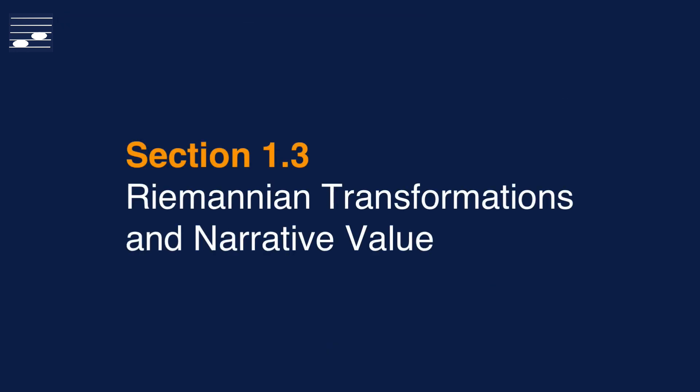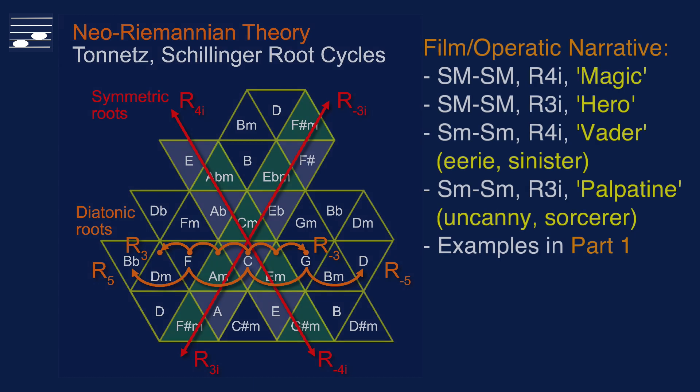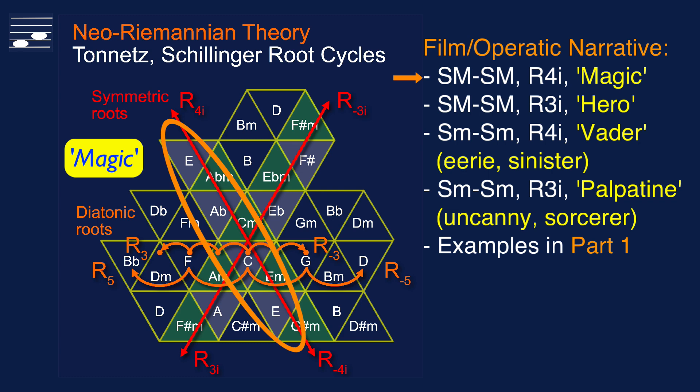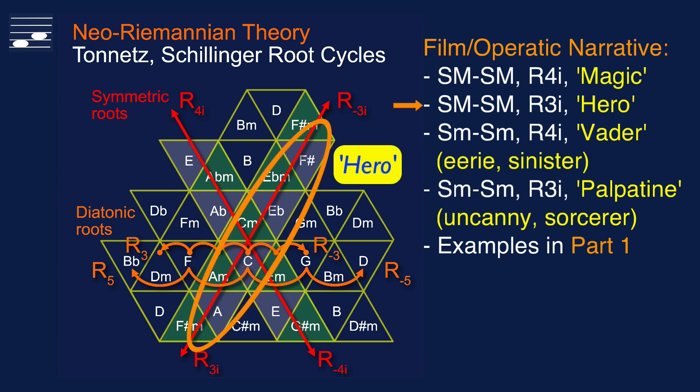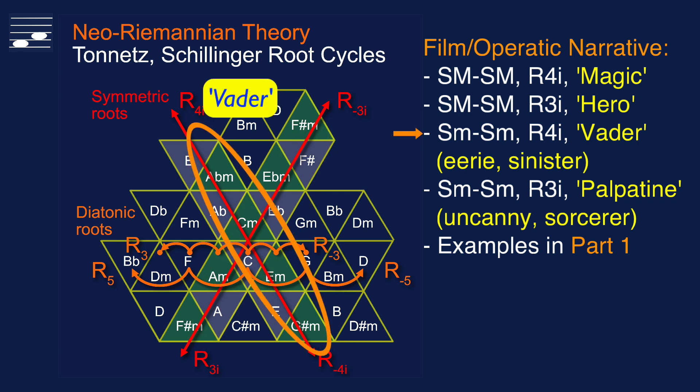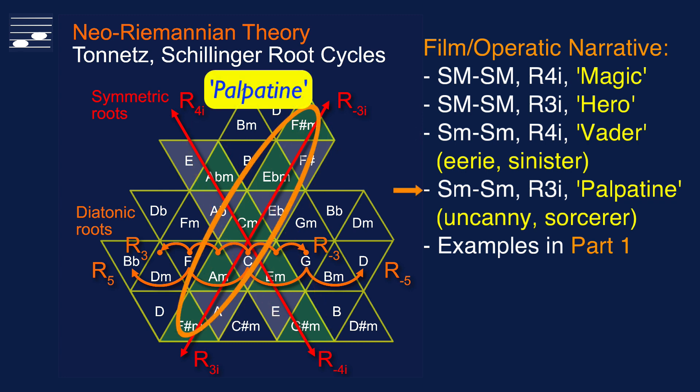When writing functional music for film or games you may benefit from the more or less established narrative value that is linked to Riemannian transformations. A reference used in part 1 puts narrative and emotional labels on the four compound transformations. I demonstrated these in the examples from that episode.